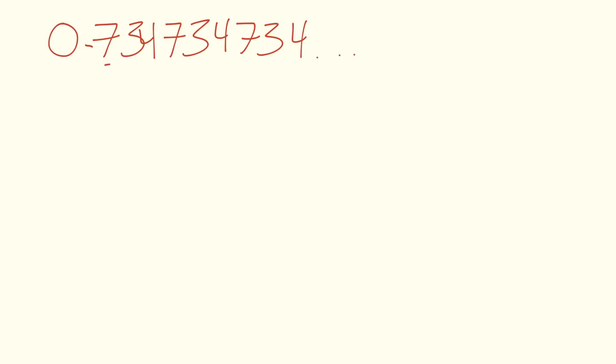The trick here is you write the number that's repeating, so 734, and you write it over as many nines as there are digits. So there are three digits that are repeating. If you type this into your calculator you'll find that it's 0.734734734 on and on.